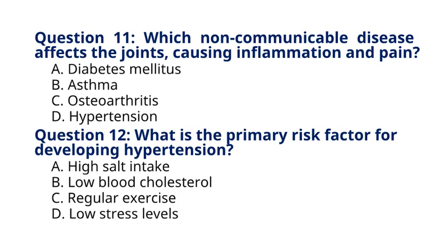Question 12: What is the primary risk factor for developing hypertension? A. High salt intake, B. Low blood cholesterol, C. Regular exercise, D. Low stress levels. The correct answer is option A, High salt intake. Explanation: High salt intake is a major risk factor for developing hypertension, or high blood pressure, due to its effect on increasing blood volume and vascular resistance.